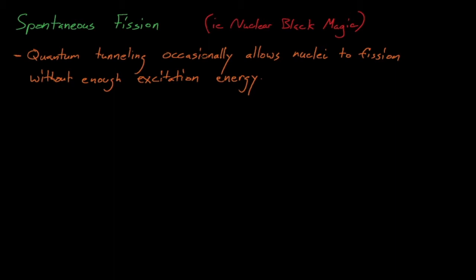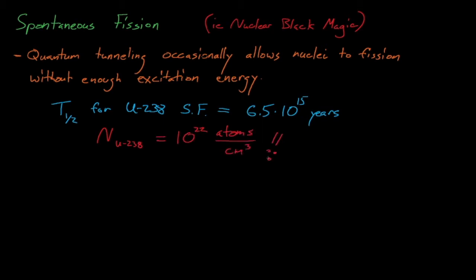As with most quantum tunneling phenomena, the probability of spontaneous fission occurring is very low. For example, the half-life for uranium-238 spontaneous fission is about 6.5 times 10 to the 15th years. However, most materials have about 10 to the power of 22 atoms per cubic centimeter, which means that several cubic centimeters of uranium-238 can expect to see a spontaneous fission reaction every few seconds to minutes.